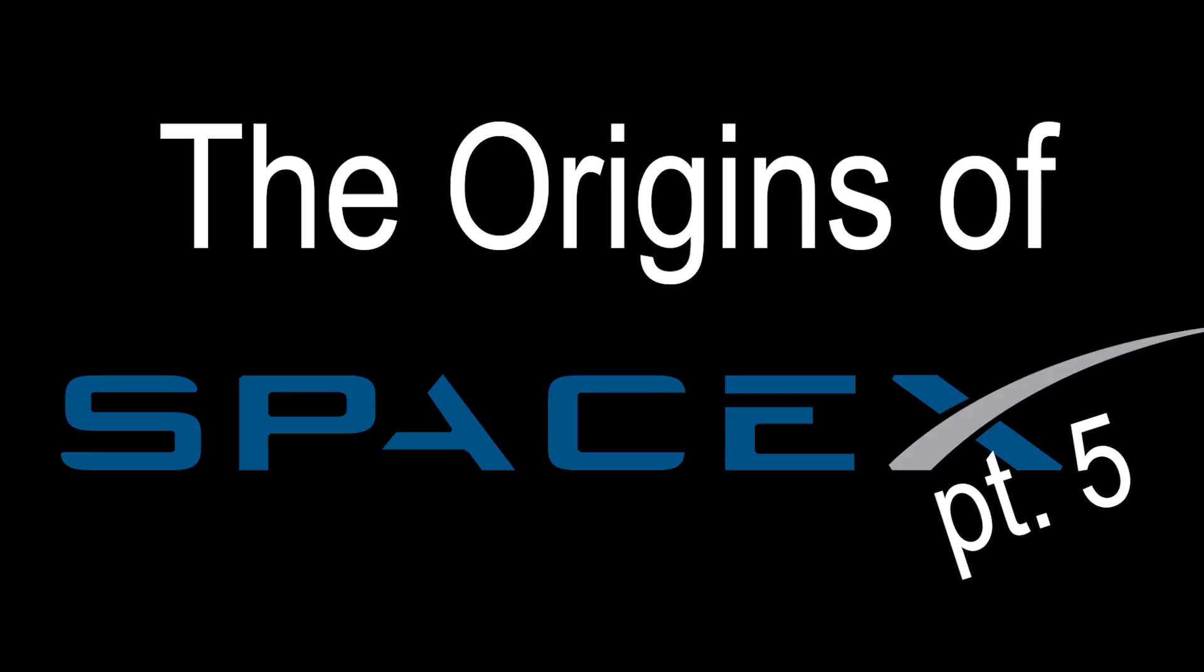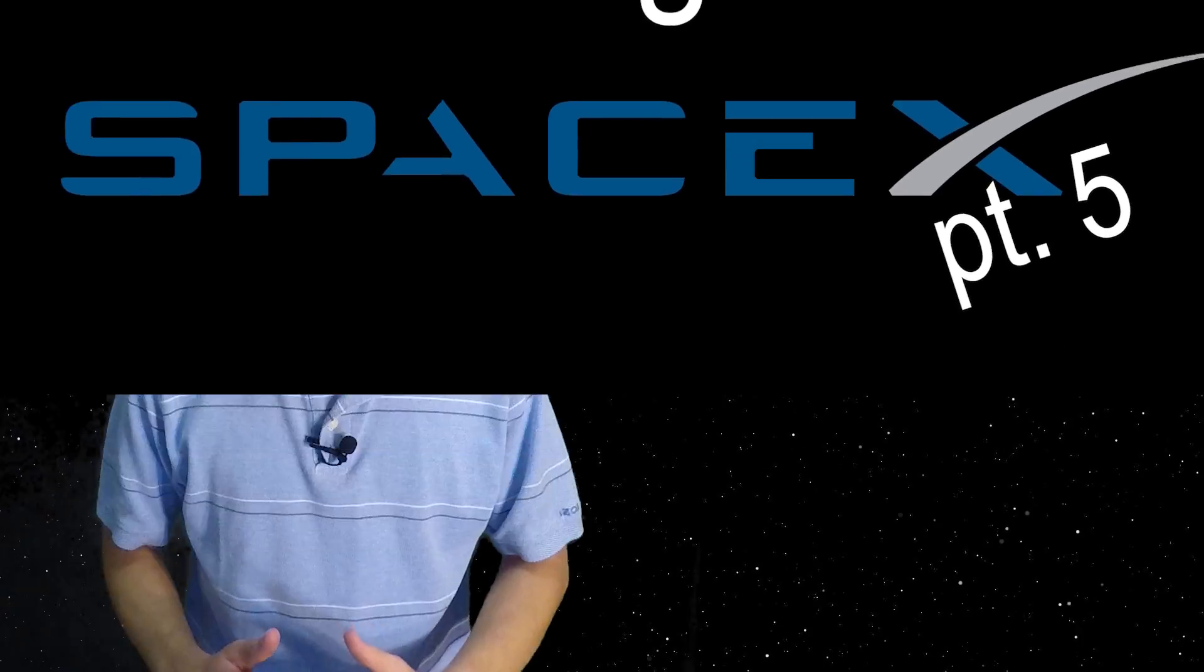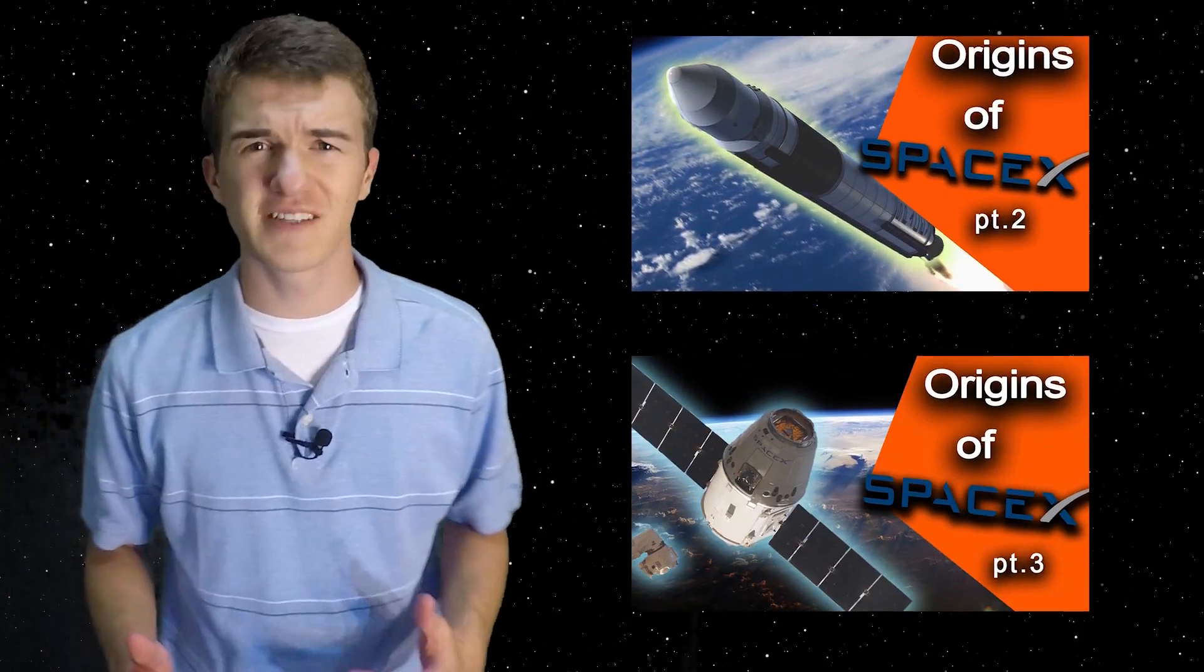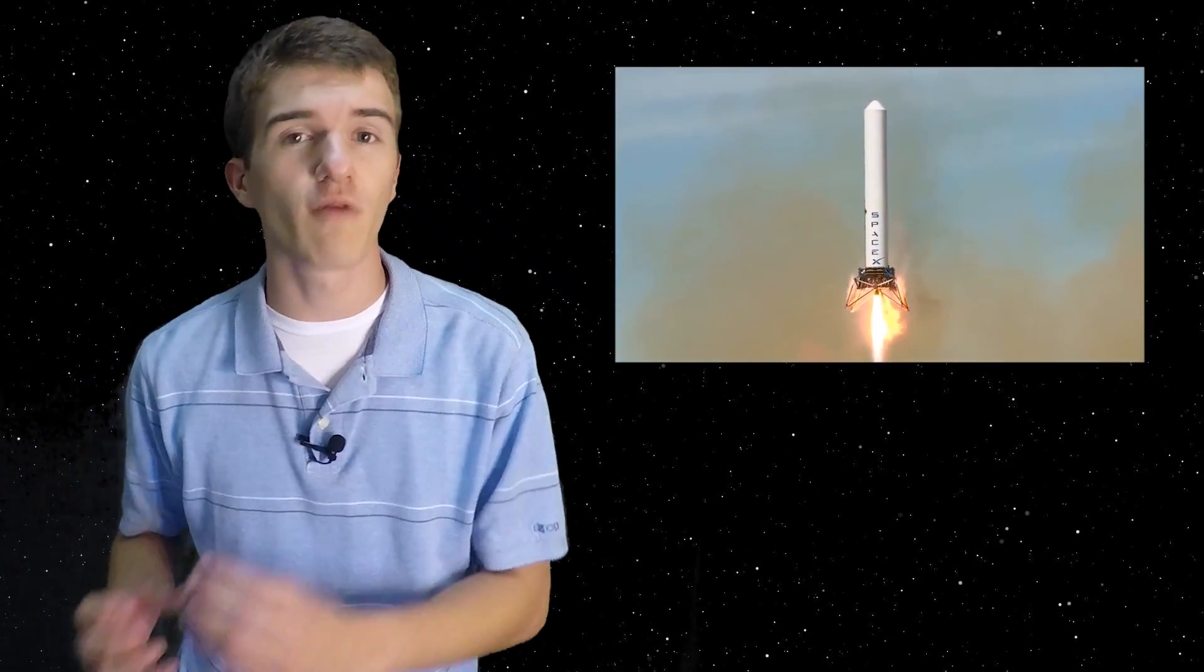The Origins of SpaceX Part 5. If you haven't seen the first four parts, I highly recommend that you go back and check those out, just to get an understanding of some of the topics I'm going to discuss. But to continue on, we are discussing the reusability project, going from the Grasshopper to the Falcon 9, and seeing whether or not they could actually vertically land their main booster.